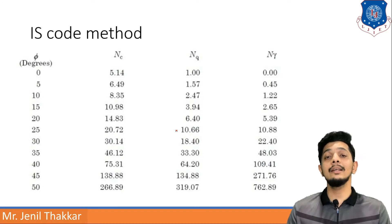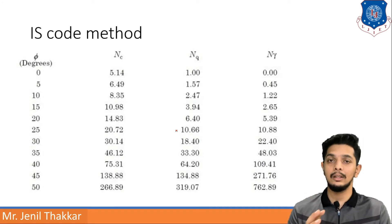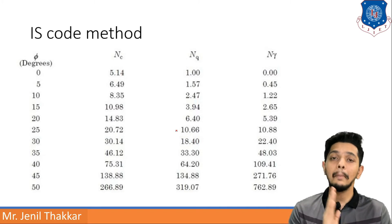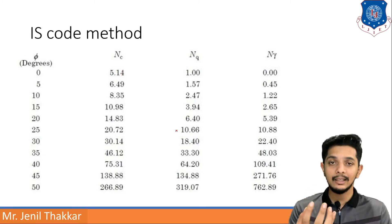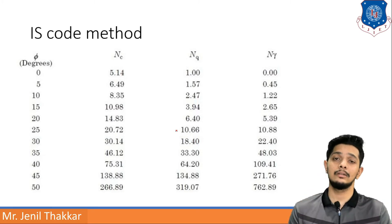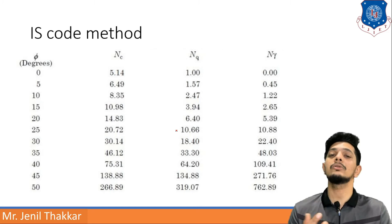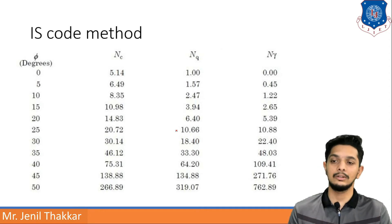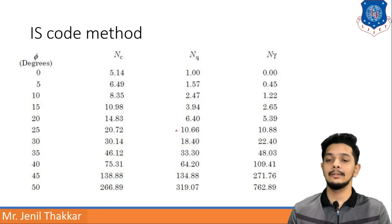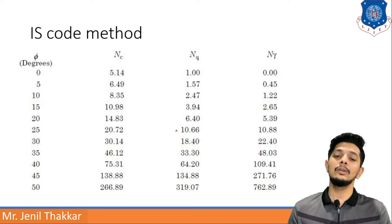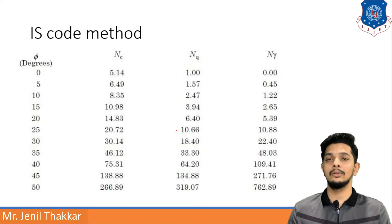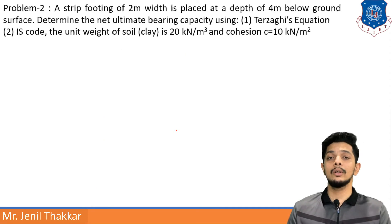The IS Code also provides a table for Nc, Nq, and Nγ values, similar to Terzaghi's constants. For φ = 0 degrees, Nc = 5.14, Nq = 1, and Nγ = 0. Let us now move forward to numerical problems.